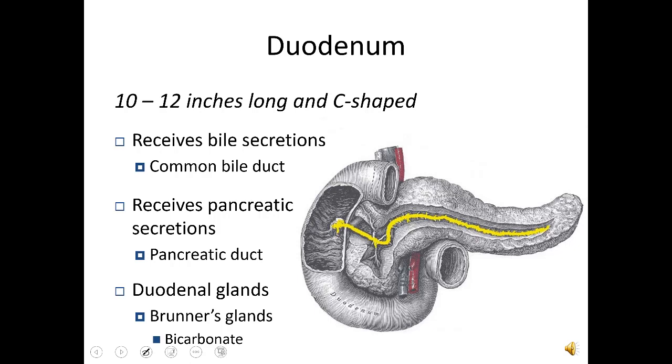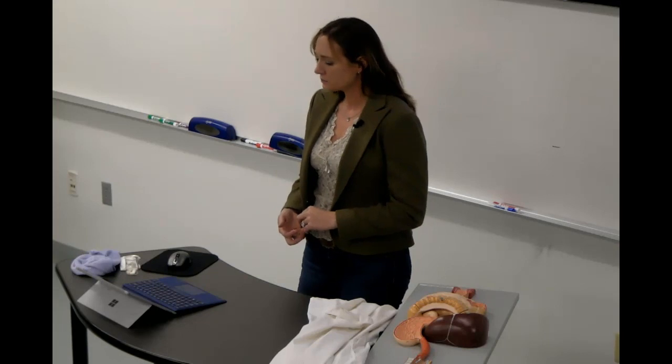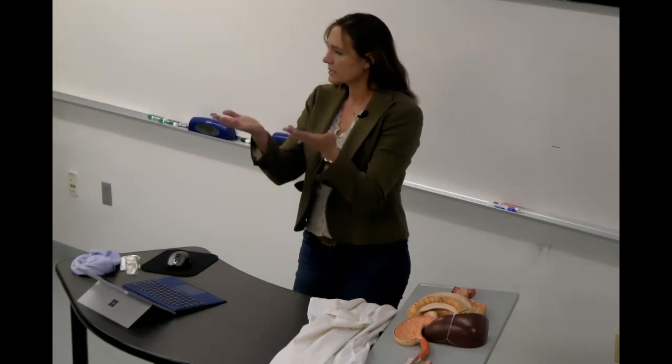The duodenum has a unique set of glands. The Brunner's glands secrete bicarbonate. Bicarbonate serves as a buffer, neutralizing acid. As soon as the very acidic chyme enters the duodenum, Brunner's glands secrete bicarbonate, neutralize it, and bring that pH back up to a moderate pH.